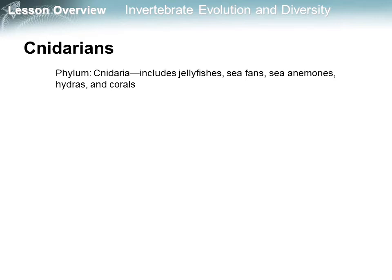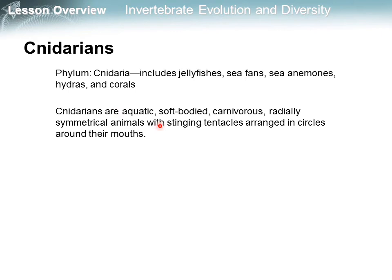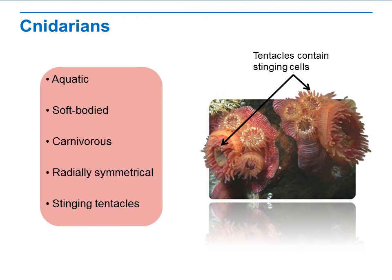The second group is cnidarians. Phylum Cnidaria includes jellyfish, sea fans, anemones, hydra, and corals. Cnidarians are aquatic, soft-bodied carnivores — radially symmetrical animals with stinging tentacles arranged in circles around their mouth. They are the simplest animals to have body symmetry. They are carnivorous and radially symmetrical, and their tentacles contain stinging cells.